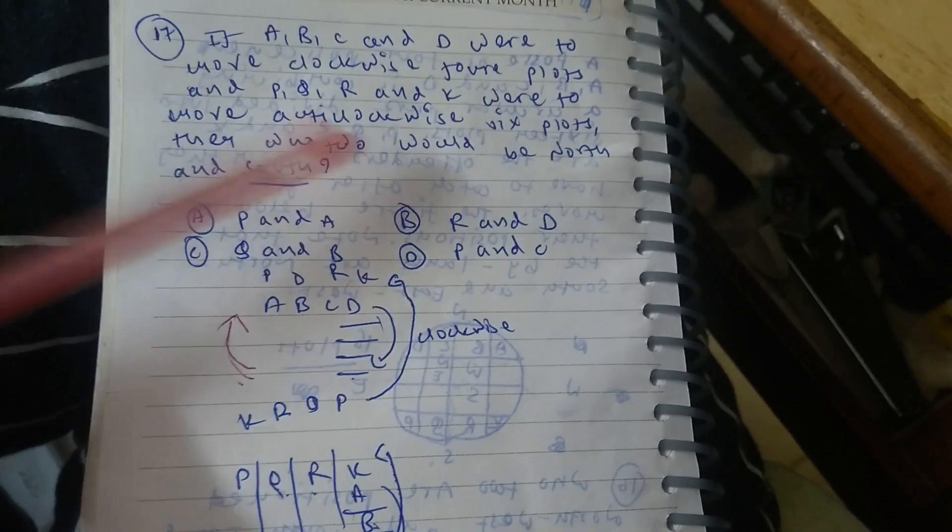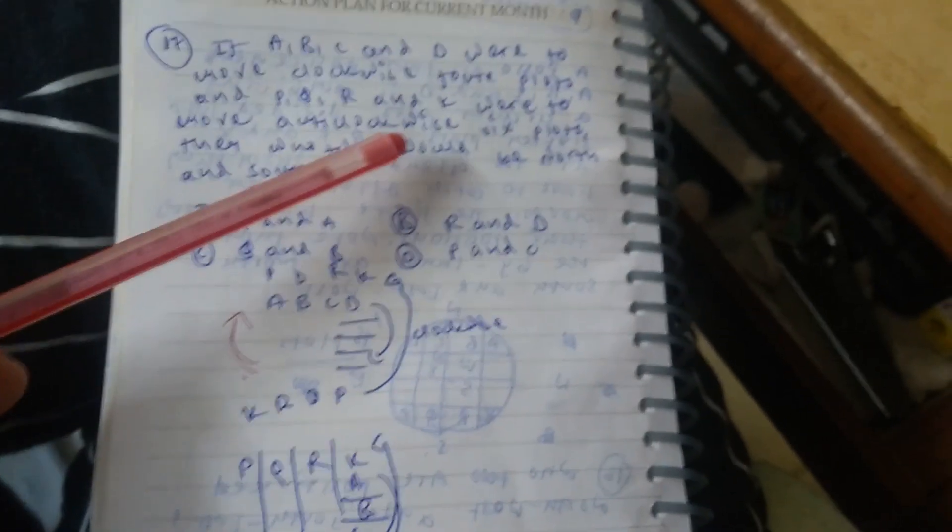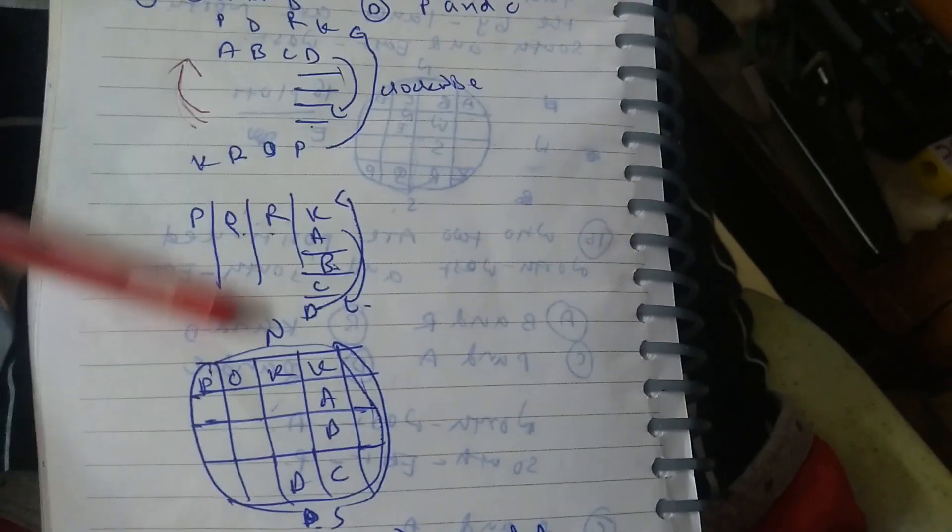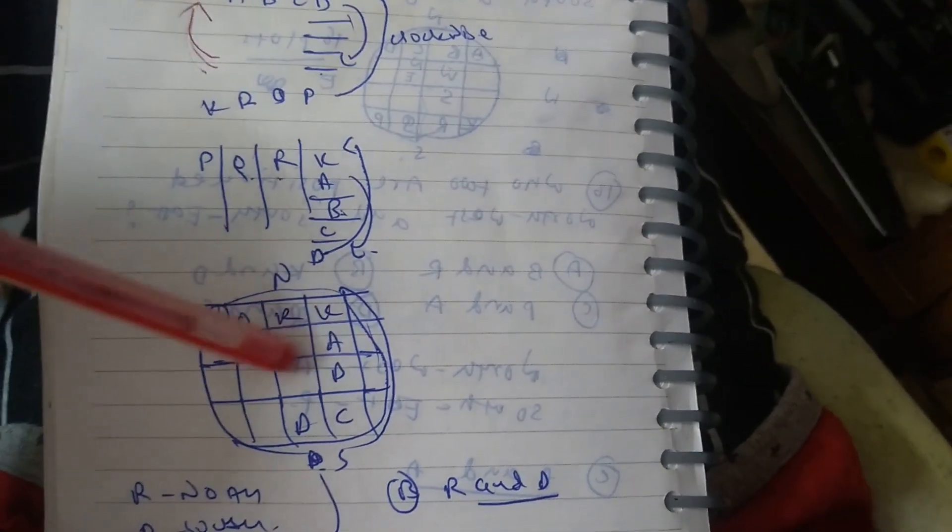So question is asked, who would be, after that clockwise and anticlockwise movement, who would be in the north and south region? At the upper north region, R will be situated,